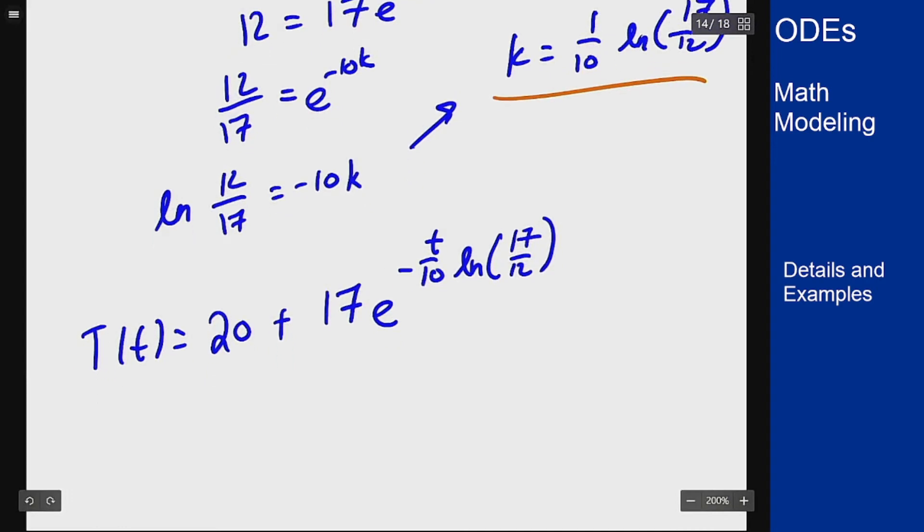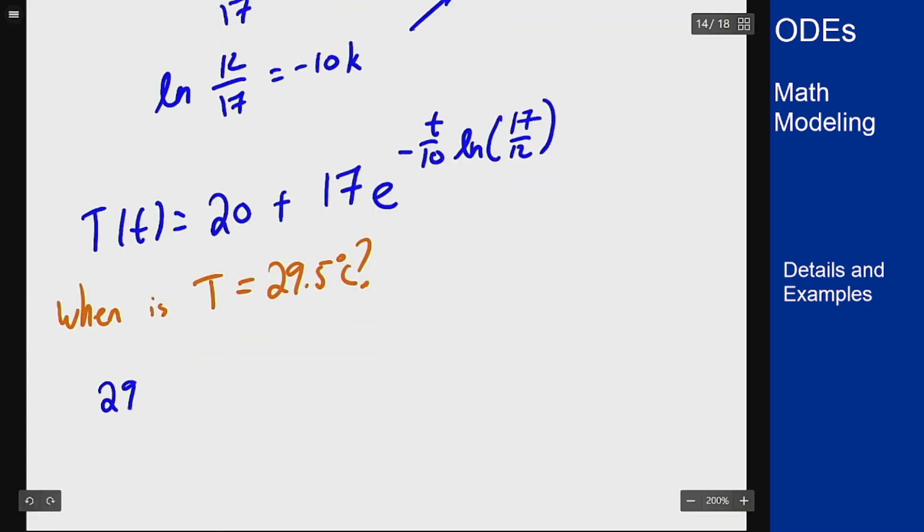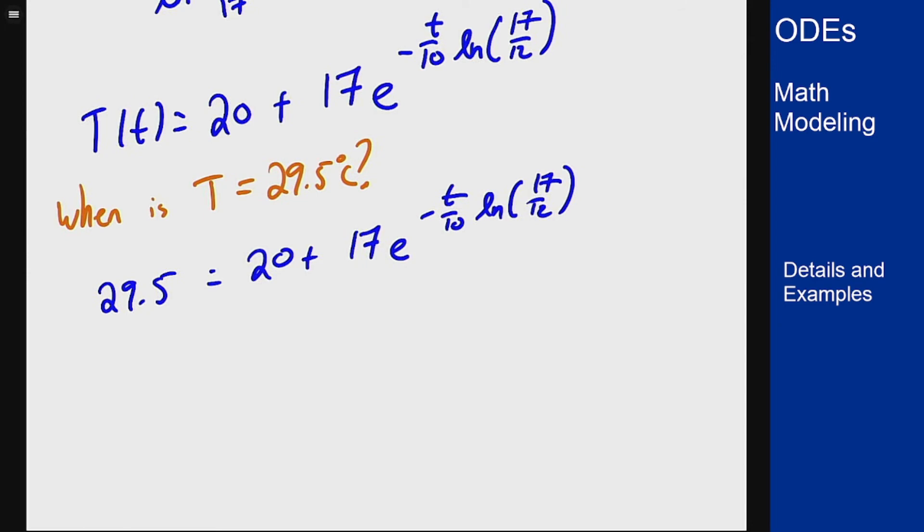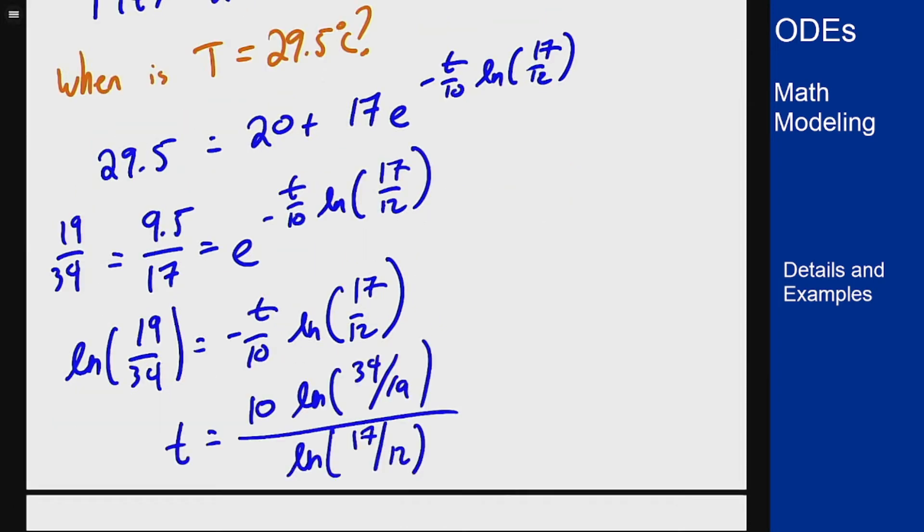Now I can solve for when T = 29.5. Plugging in: 29.5 = 20 + 17e^(-(t/10)ln(17/12)). Solving this out, I get 9.5/17 = e^(-(t/10)ln(17/12)), which is 19/34. Taking the log of both sides and solving for t, this comes out to about 16.71 minutes.